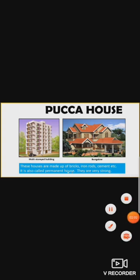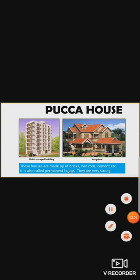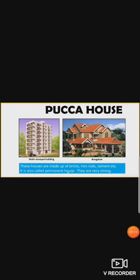Pakka houses are made up of bricks, iron rods, cement, etc. It is also called a permanent house. The reason is these houses are very strong and we cannot move them — they are fixed at one place.